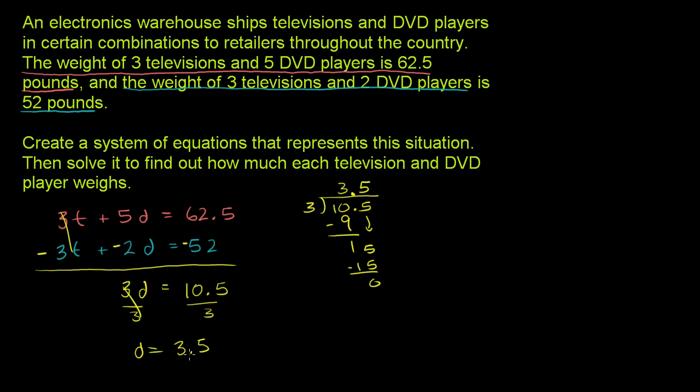Now we can substitute back into one of these equations up here to figure out the weight of a television. We could just use that top equation. So you get 3T plus 5 times the weight of a DVD player, which we just figured out is 3.5. Remember, we're just looking for values that satisfy both of these equations. So 5 times 3.5 needs to be equal to 62.5.